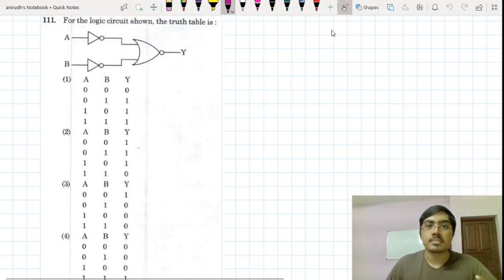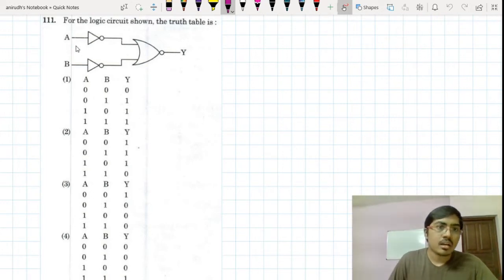Question number 111 is from the topic of logic gates, semiconductor electronics. Let's solve this. This is a NOT gate, so this will be A bar. Now this is a NOR gate, so this will be A bar plus B.